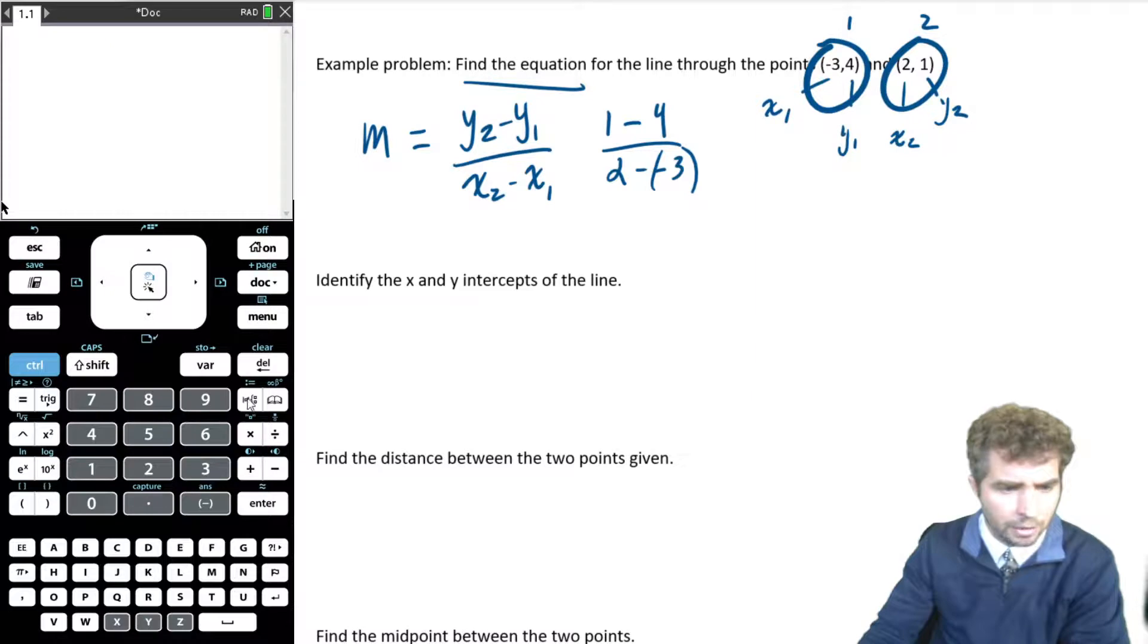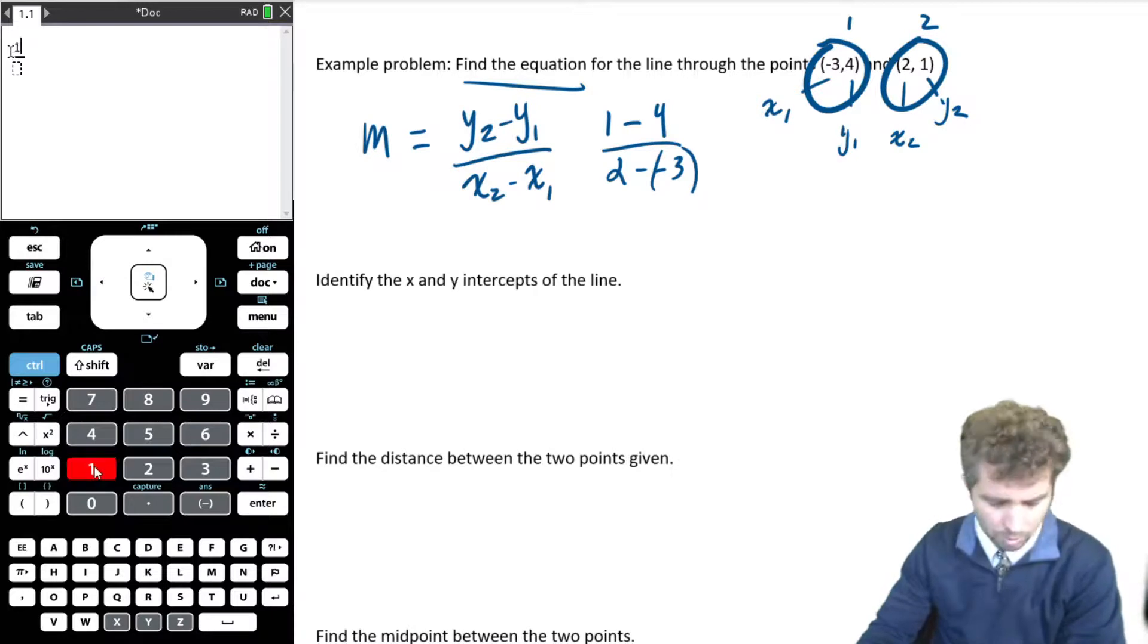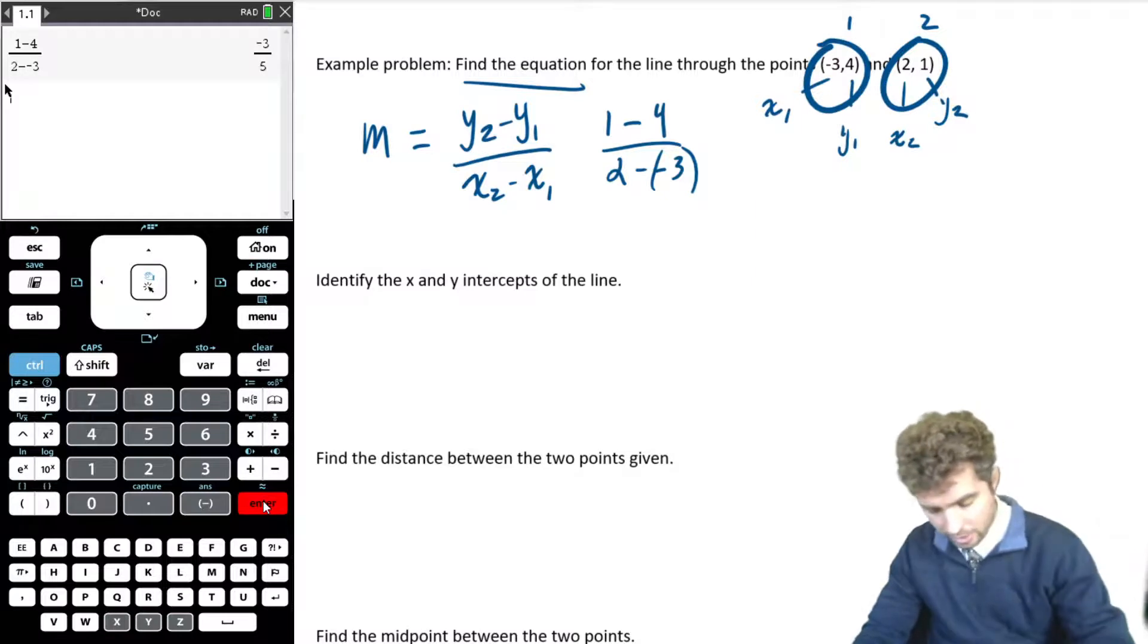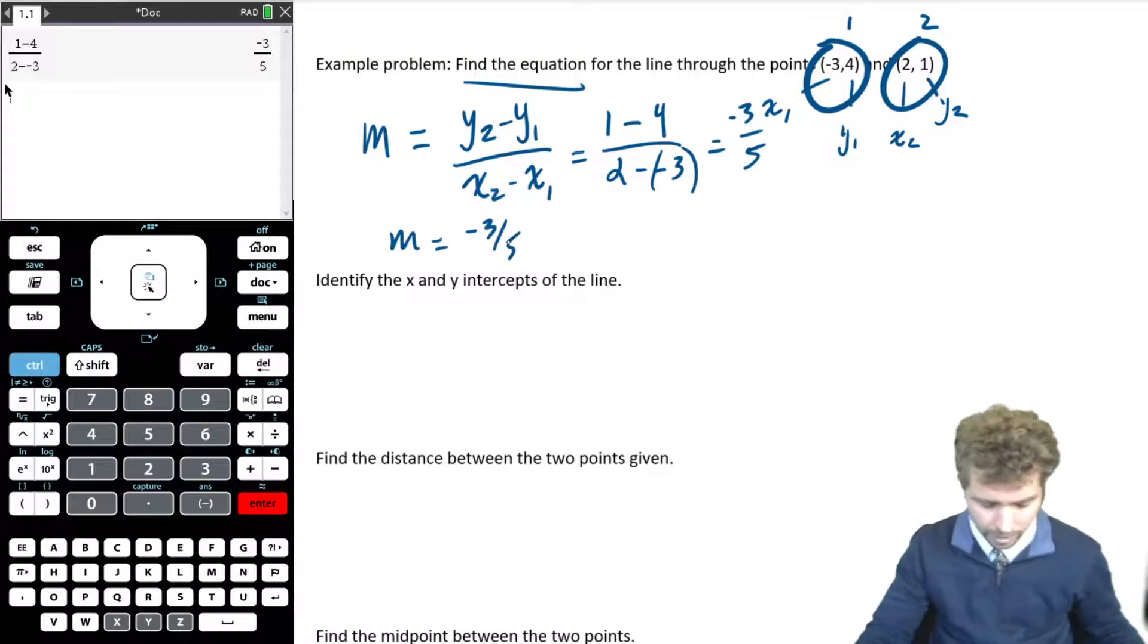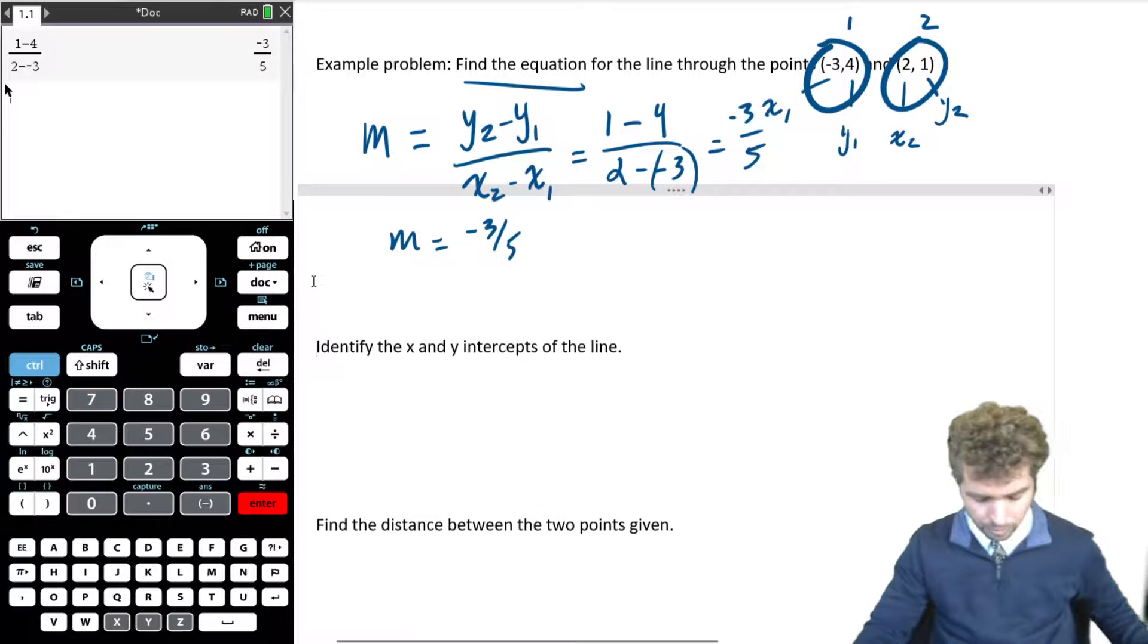I'm going to do the top of the fraction, so 1 take away 4, 1 minus 4, and then in the bottom of the fraction, I'm going to do 2 minus negative 3. And I can hit enter, and the slope is negative 3/5. Okay, that's my slope. So m equals negative 3 over 5.